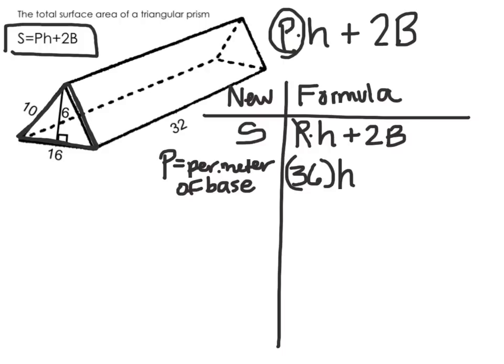36 times H plus 2 times the area of the base. The next letter that I'm going to solve for is this H. Now H stands for the height of the prism. I find that here. 32 is the height of this prism.